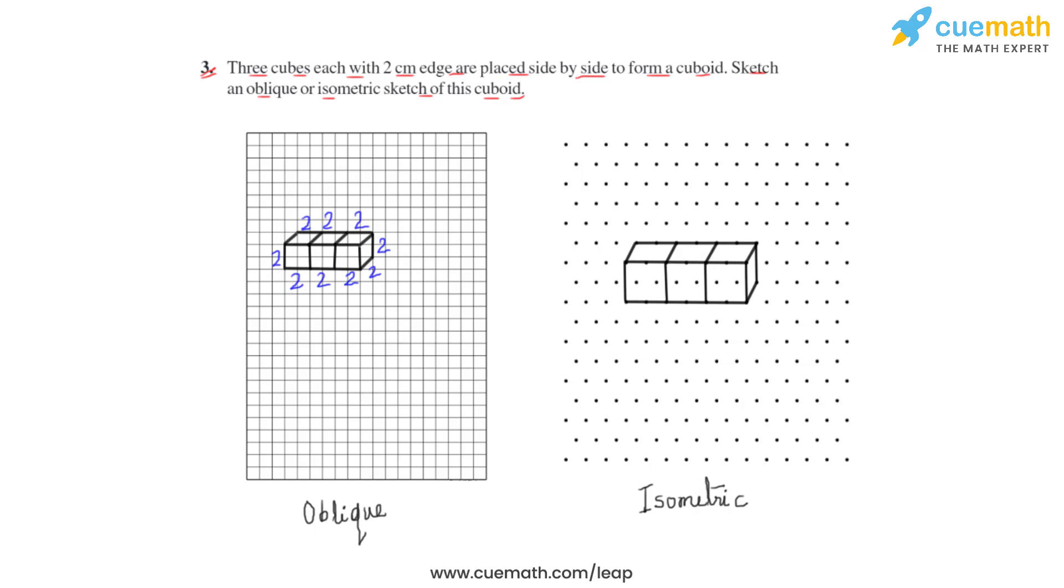This is how the three cubes placed side by side to form a cuboid will look as an isometric sketch when represented with the help of an isometric dot sheet, where the dimensions of these three cubes are still the same.